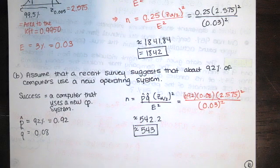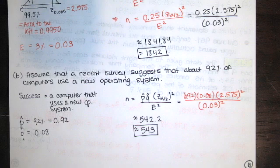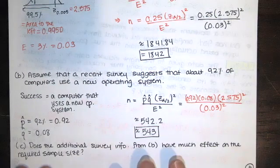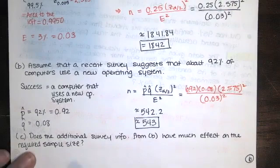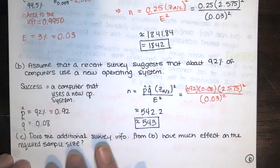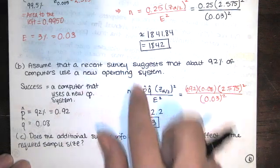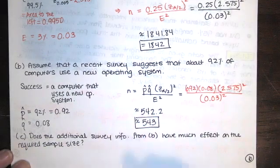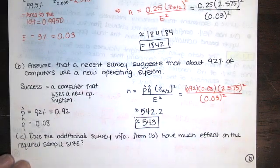I think the last part of the question is this. It says, does the additional survey information from Part B have much effect on the required sample size? We say, yes, the new sample size is much smaller when we have that information.